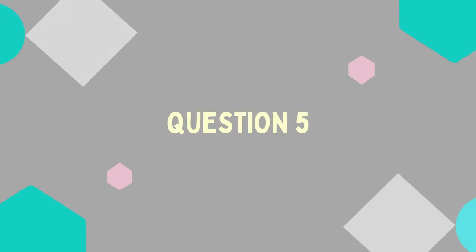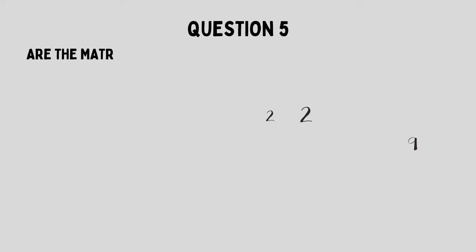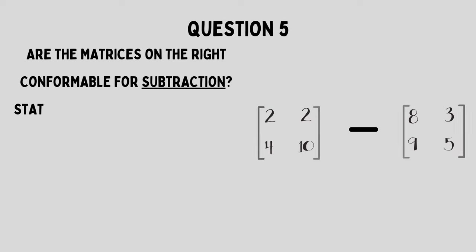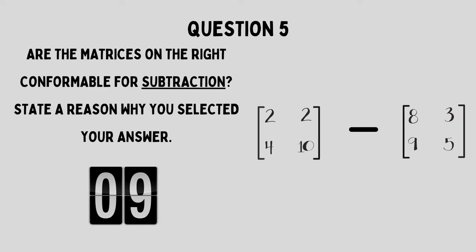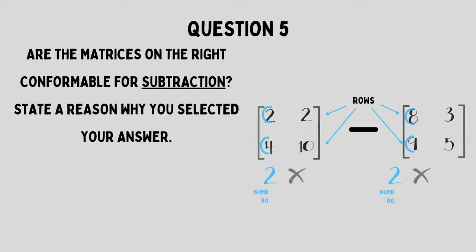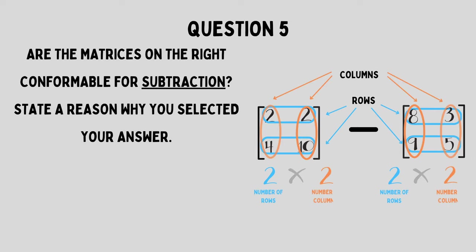Question five: Are these matrices here conformable for subtraction? They definitely are — they have the same number of rows and the same number of columns. Both of them are of the same order. This is what we did in our previous video where we talked about the order of a matrix.